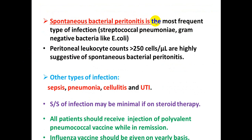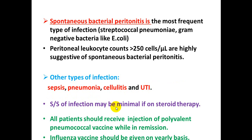Spontaneous bacterial peritonitis is the most frequent type of infection in nephrotic syndrome, usually caused by Streptococcal pneumoniae and gram-negative bacteria like E. coli. A peritoneal leukocyte count of more than 250 cells per microliter is highly suggestive of spontaneous bacterial peritonitis. Other types of infection that may develop include sepsis, pneumonia, cellulitis, and UTI. Note that signs and symptoms of infection like fever and pain may be minimal if the patient is on steroids.